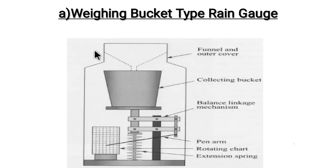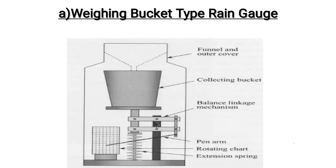The first is the weighing bucket type. As you can see, there is a collecting bucket with a weighing balance below it. The pan is connected to a weighing machine, and a pen arm is connected to the weighing machine. When rain occurs, water falls into the bucket, the weighing machine registers a value, and the pen arm rotates making a graph. From this graph we can determine the intensity and timing of the rainfall.